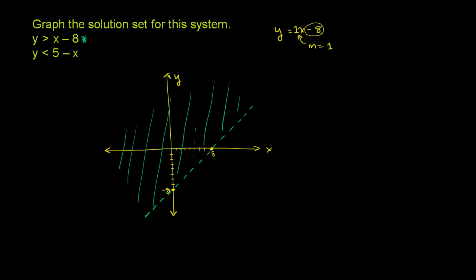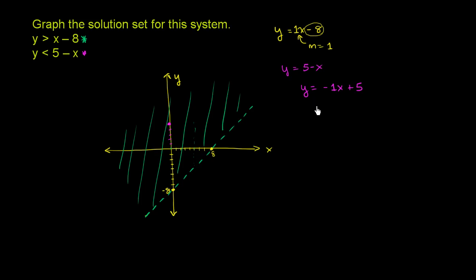Now let's do the second inequality. The boundary line is y is equal to 5 minus x, or equivalently y equals negative x plus 5. The y-intercept is at 5, and it has a slope of negative 1. When y is 0, x equals 5. So every time we move right one, we go down 1.